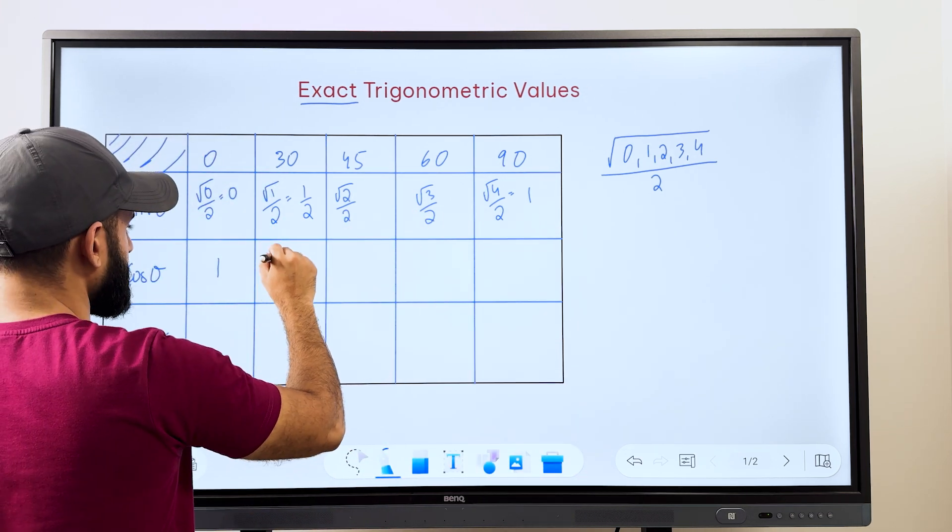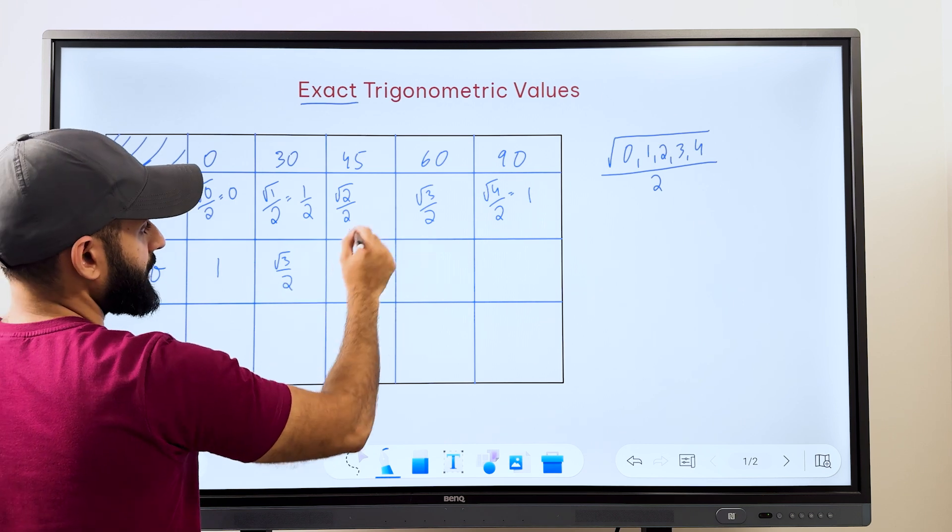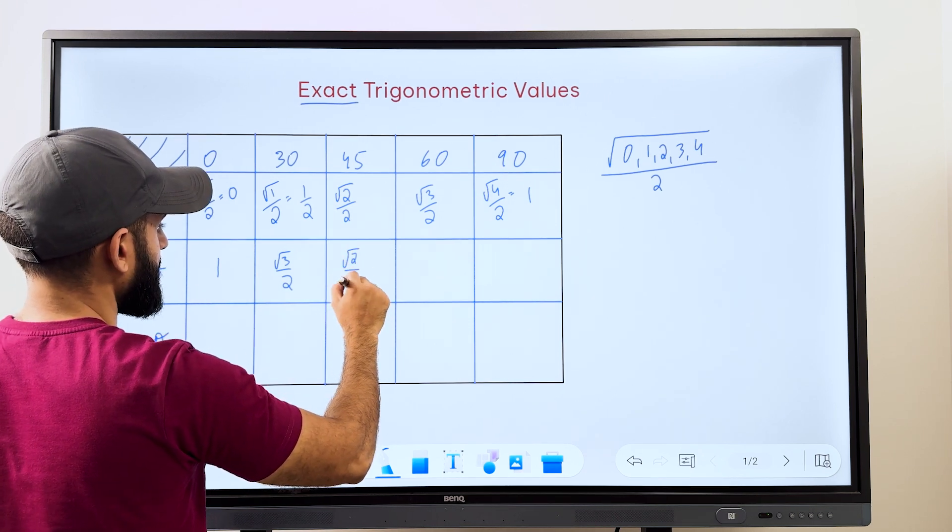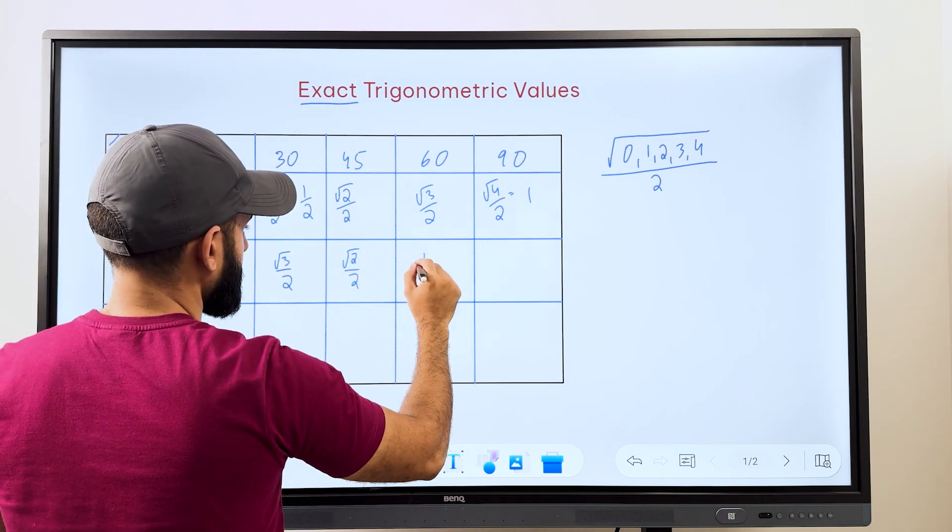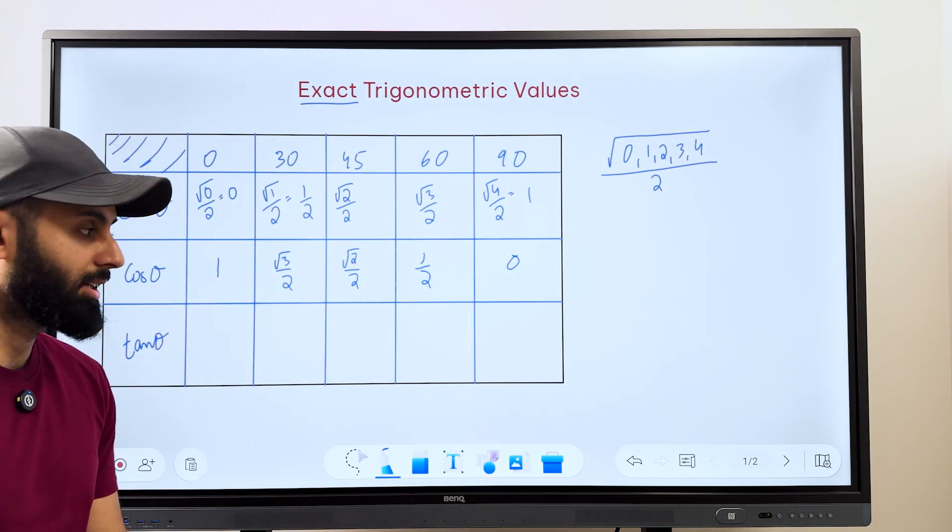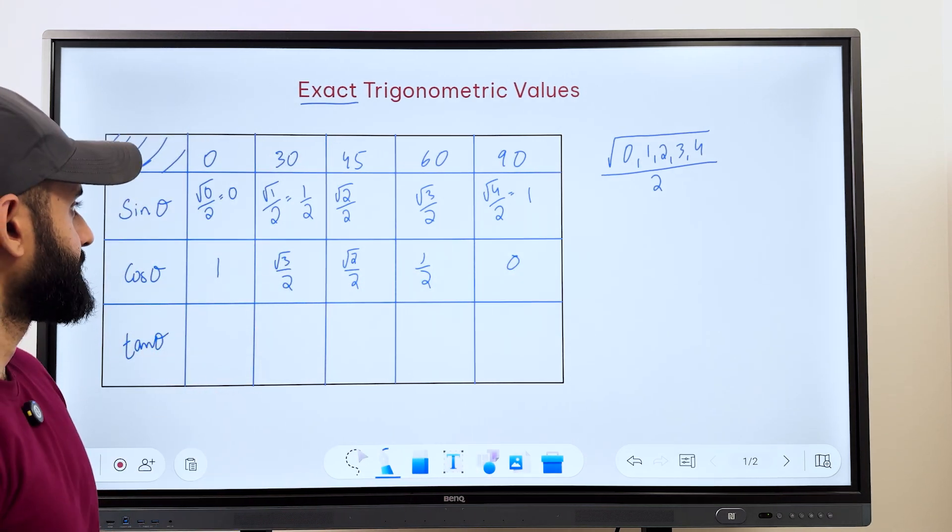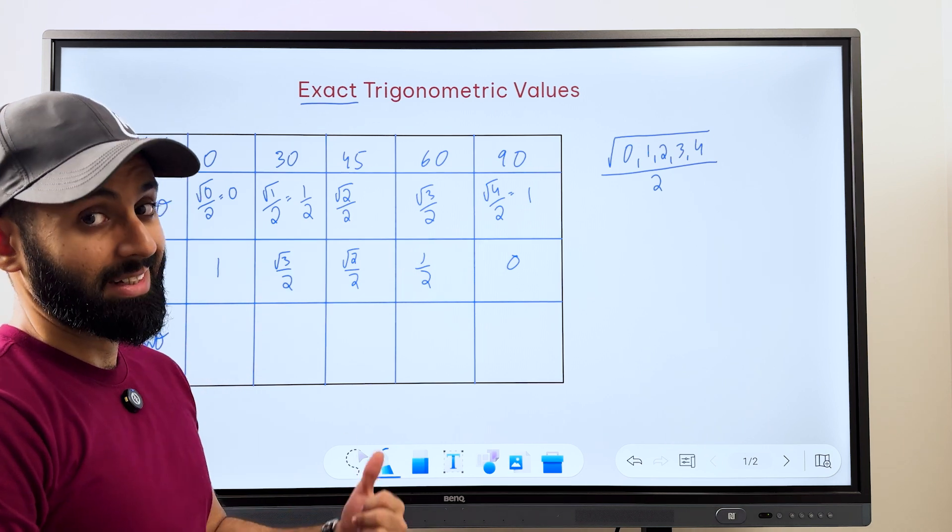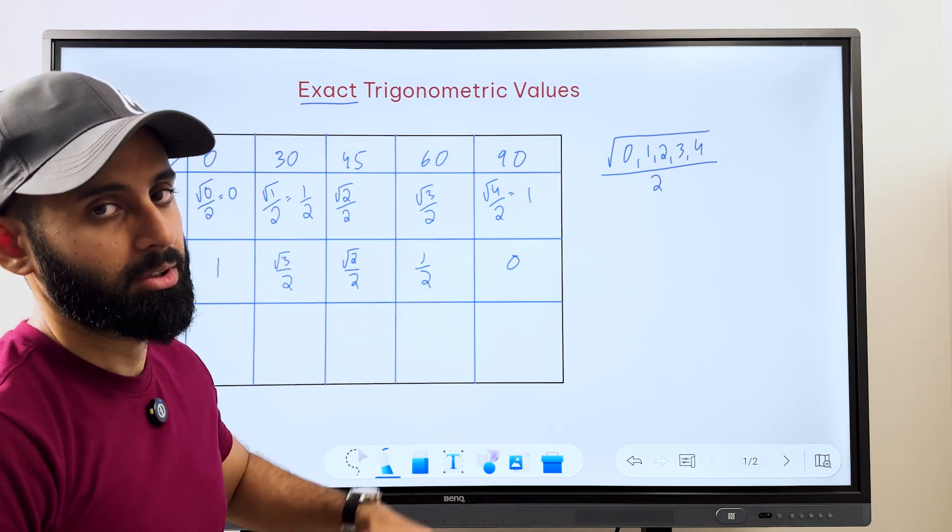So 1 and then root 3 upon 2 and then root 2 upon 2 remains the same. And then 1 upon 2 is what cos 60 is. And then 0 is what cos 90 is. Now what do we do for tan? Now for those of you who know trigonometric identities, you should know that tan is basically equal to sin upon cos.